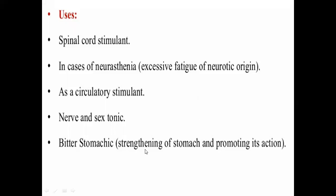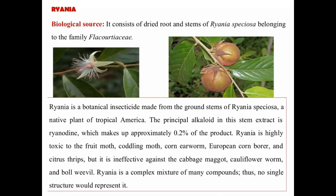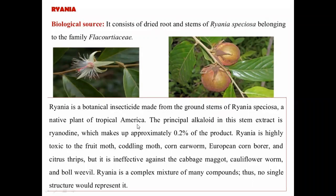The next plant we are using is Rania. It consists of dried roots and stems of Ryania speciosa, belonging to the family Flacourtiaceae. Rania is a botanical insecticide made from the ground stem of Ryania speciosa, a native plant of tropical America — it is not an Indian plant. The principal alkaloid in this stem extract is ryanodine.